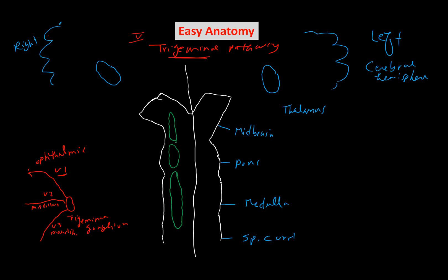The central process carries sensation to the next level — the nuclei. We have three nuclei located throughout the whole length of the brainstem, extending even to the spinal cord. The first is the spinal trigeminal nucleus. The second is the main sensory or principal nucleus. The third is the mesencephalic nucleus, located in the midbrain.